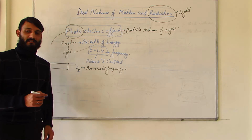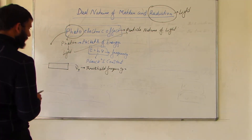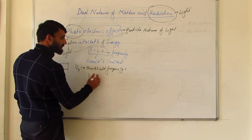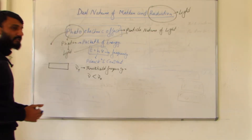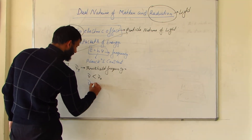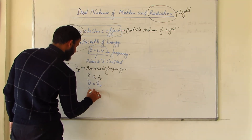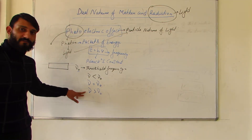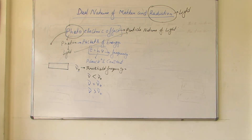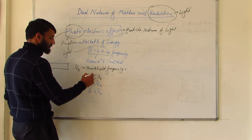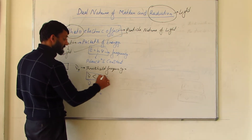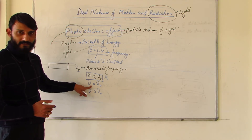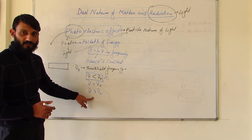Consider three cases: a photon with frequency ν less than ν₀, ν equal to ν₀, and ν greater than ν₀. When ν < ν₀, emission of electrons will not take place. When ν = ν₀ or ν > ν₀, emission of electrons will take place.